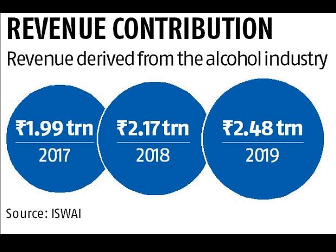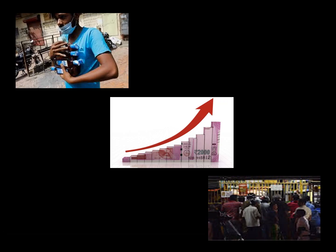The last factor is about the impact on the economy. The sale of liquor contributes a huge amount to states directly through tax. For nearly all state governments, liquor revenues are a cash cow. As many as 21 states, including several large states, derived more than 15% of their own tax revenues from the sale of liquor. When the nation is grappling with falling revenues and rising spending, a ban on liquor will be a tough call for the government.